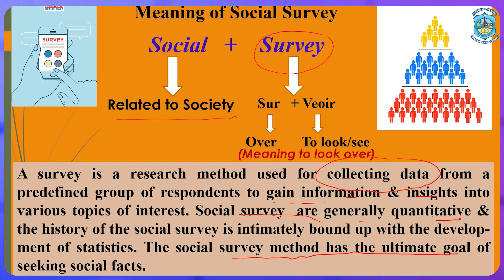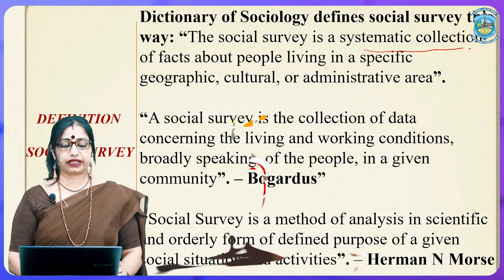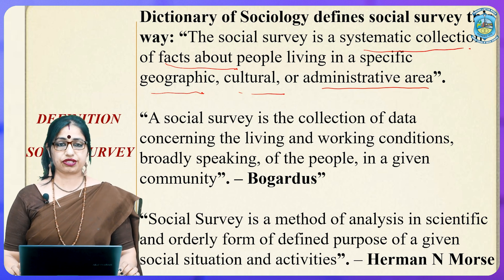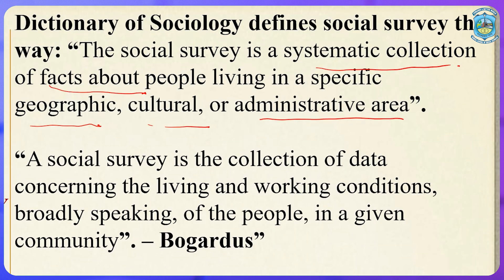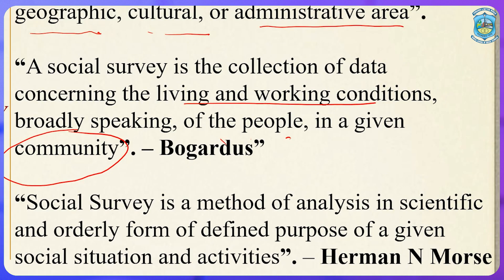The social survey method has the ultimate goal of seeking social facts. One definition states that a social survey is a systematic collection of facts about people living in a specific geographical, cultural, or administrative area. According to Bogardus, a social survey is the collection of data concerning the living and working conditions of people in a given community. According to Morse, it is a method of analysis in scientific and orderly form for a defined purpose of a given social situation and activities.